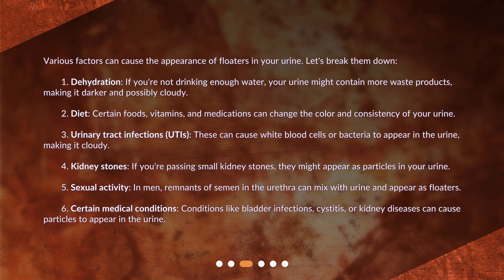Third, urinary tract infections (UTIs): these can cause white blood cells or bacteria to appear in the urine, making it cloudy. Fourth, kidney stones: if you're passing small kidney stones, they might appear as particles in your urine. Fifth, sexual activity: in men, remnants of semen in the urethra can mix with urine and appear as floaters. Sixth, certain medical conditions like bladder infections, cystitis, or kidney diseases can cause particles to appear in the urine.